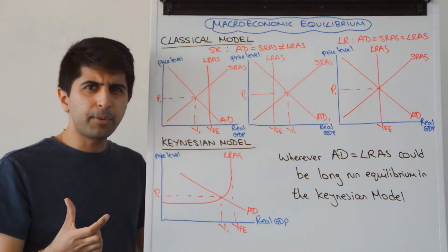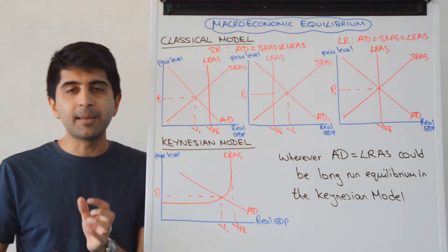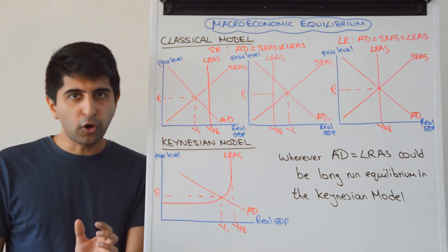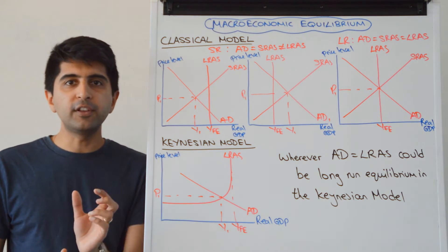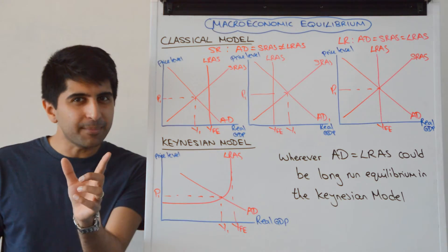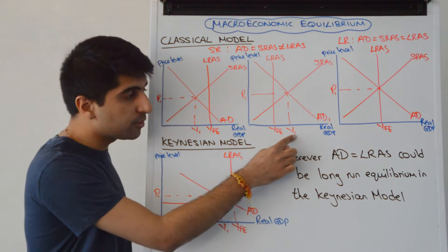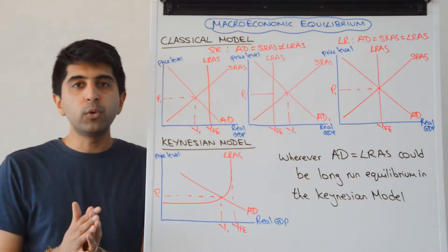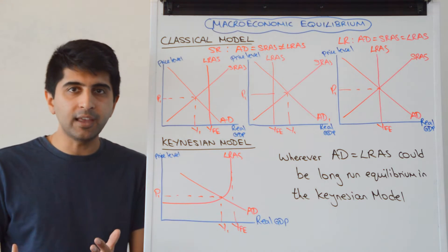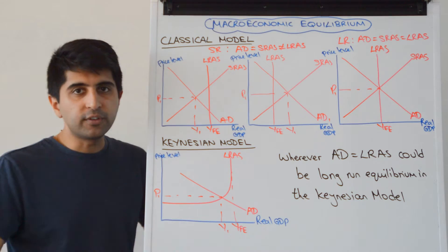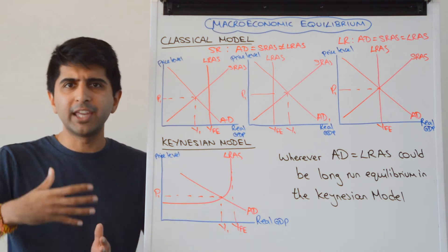How on earth is that possible? Well, remember what YFE is. YFE is the maximum level of output an economy can produce using all of its factors of production at sustainable levels. So it is possible to produce beyond YFE if we use our factors of production unsustainably. For example, we use labor unsustainably - they're working overtime,